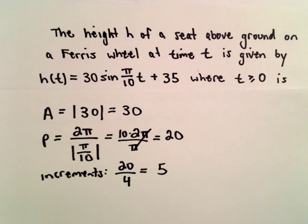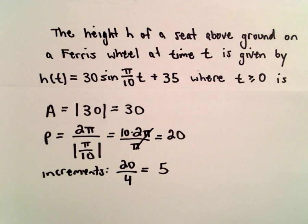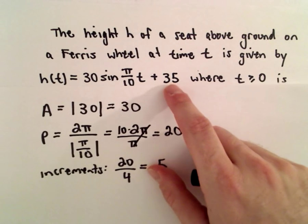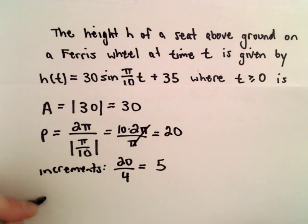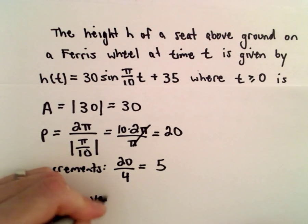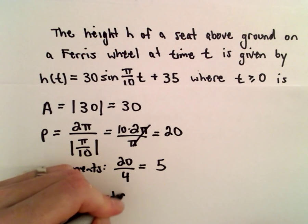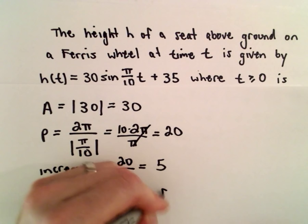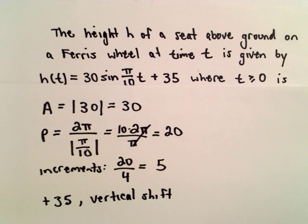The positive 35 is going to correspond to a vertical shift, so we'll think about that as well.